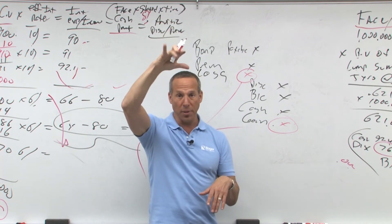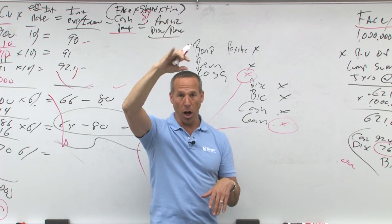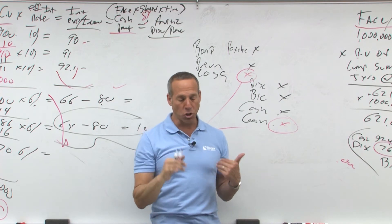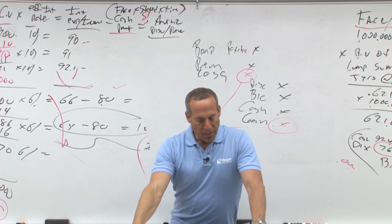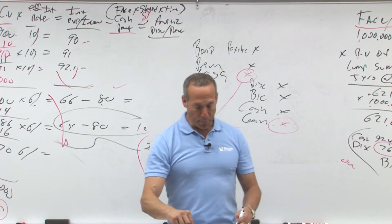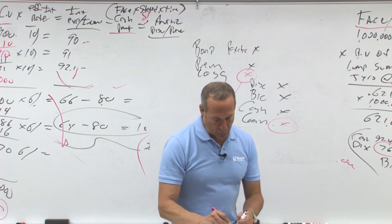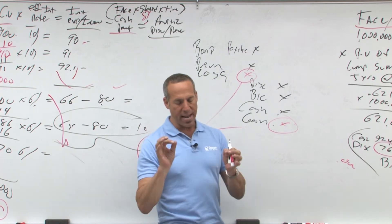So it's either part of O-N up at the top, right, and other non-operating, or it's down there extraordinary net of tax. You'll see here it says, it's classified as part of continuing operations unless it is determined to be both unusual and infrequent, in which case it would be considered an extraordinary item net of tax.